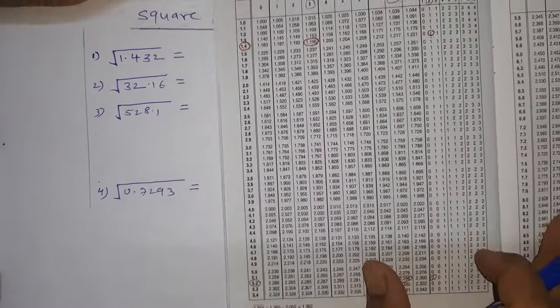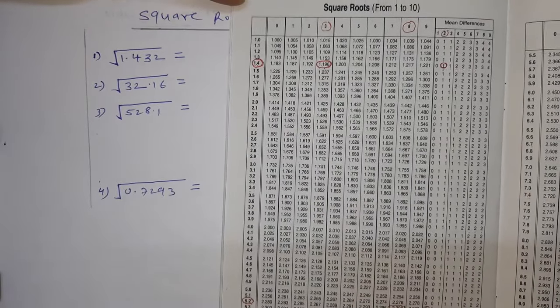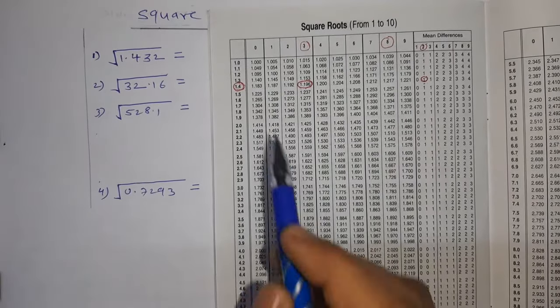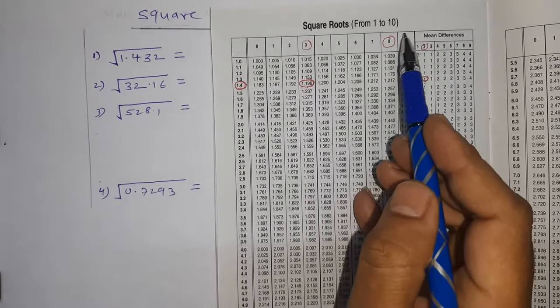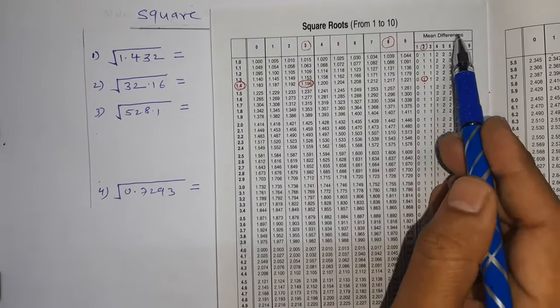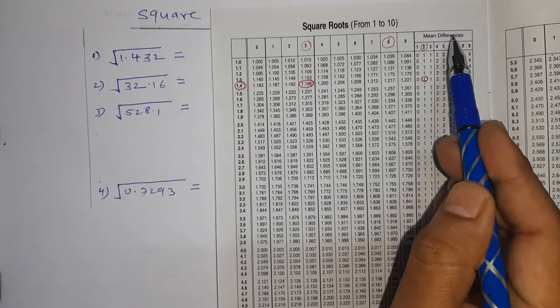Now we'll see how to read the table: first two digits we'll see in this column, third digit we'll see in this column, and fourth digit we'll see in mean difference.